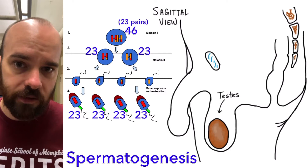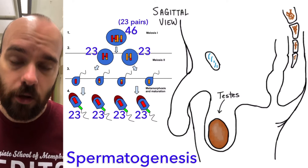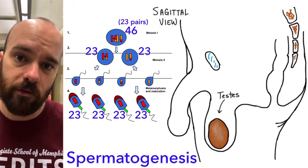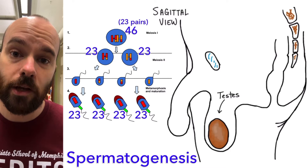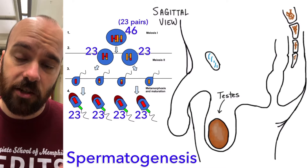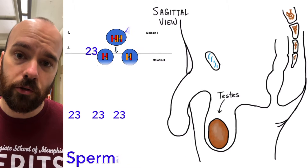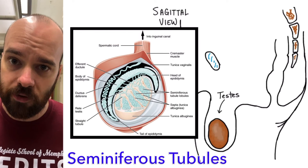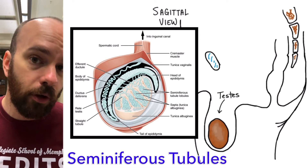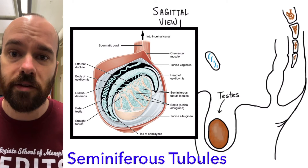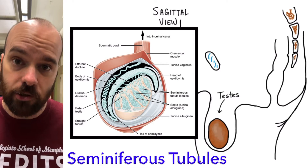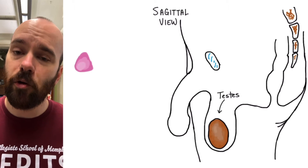Whenever fertilization of an egg cell occurs, 23 chromosomes will come from the sperm cell and 23 chromosomes from the egg cell, creating a new combination of 46 chromosomes for that new zygote. Inside the testes are these long coiled tubes called the seminiferous tubules. As these spermatocytes travel through the seminiferous tubules, they'll undergo the processes of mitosis and meiosis, and they'll eventually develop into mature sperm cells that have the potential to fertilize an egg.